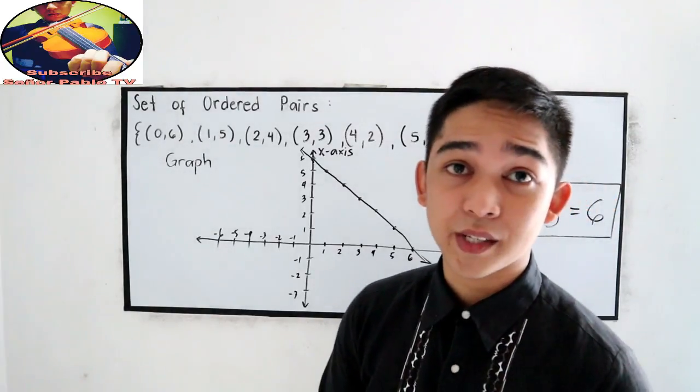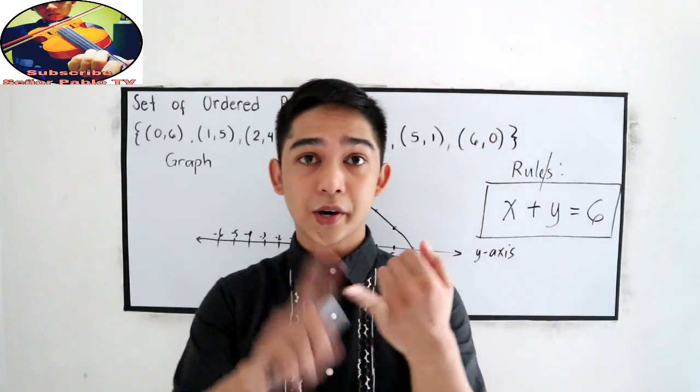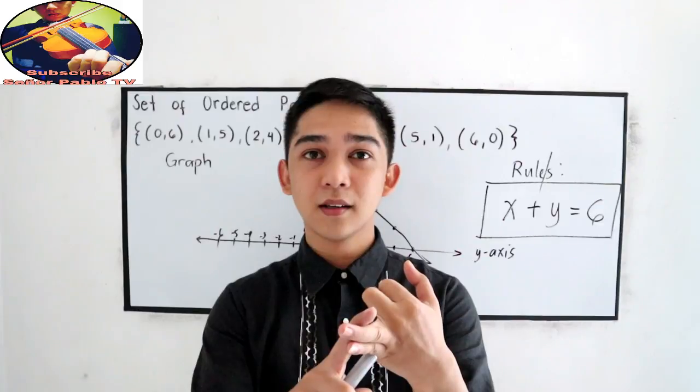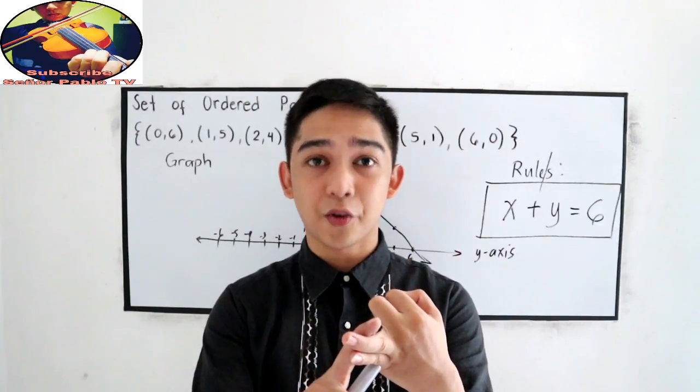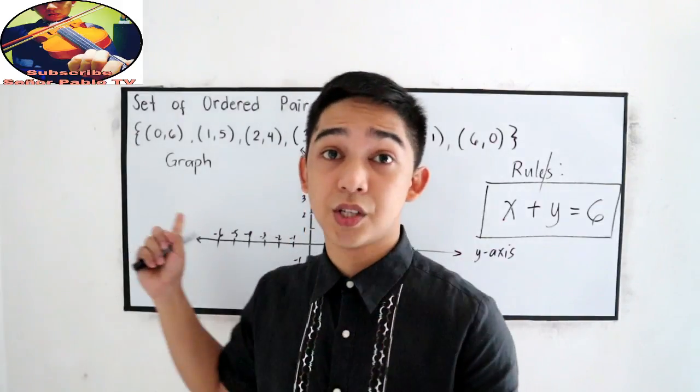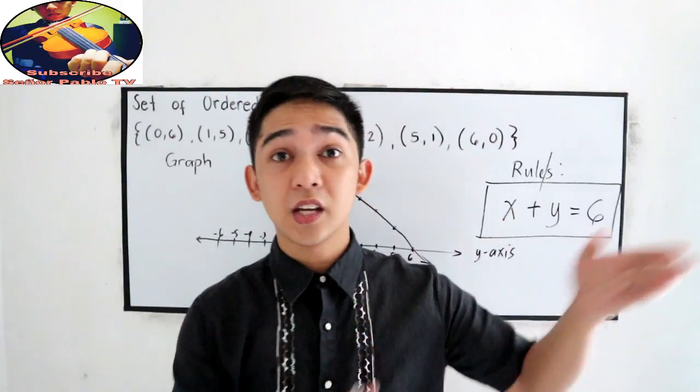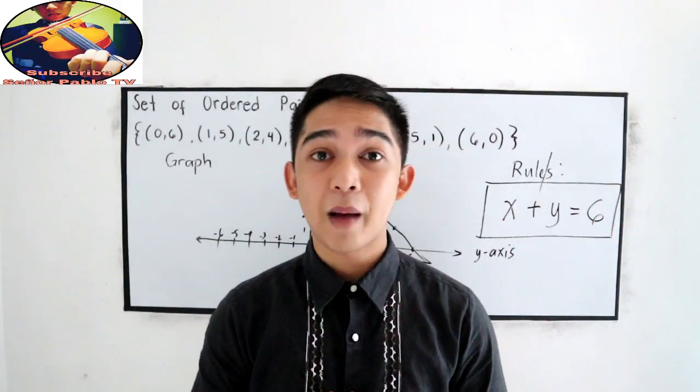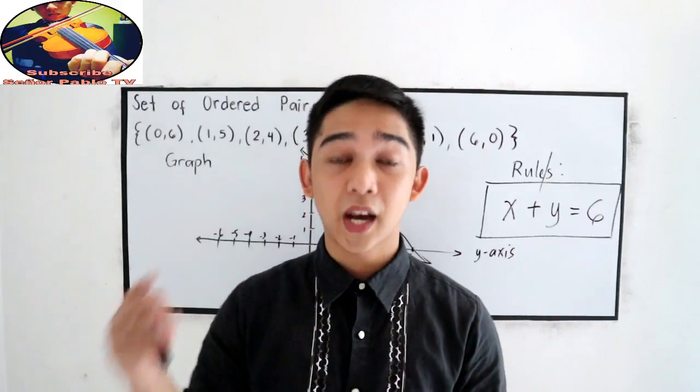So, those are the four ways to represent our relations. First, the table of values. Second, the mapping or arrow diagram. Third, is using the graph. And fourth, is using rule. Thank you for watching. That is, the relations.